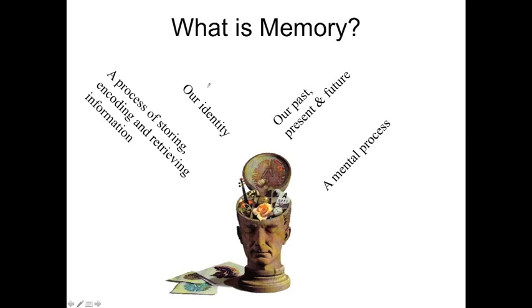What is memory? Here are some suggestions made by previous pupils over the last few years. Some of them are quite text-booky: memory is a mental process, it's produced by the brain, or it's a function of the brain. It's a process of storing information, a process of encoding information, and a process of retrieving information. We're going to look at all these areas a little bit later on.